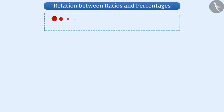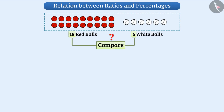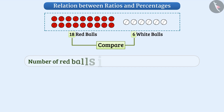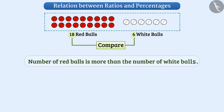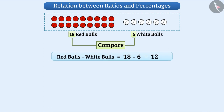This box contains 18 red balls and 6 white balls. If you are asked to compare their numbers, we can say the number of red balls is more than the number of white balls, but such statements do not give us a precise sense of numbers. For example, the number of red balls is 18 minus 6, equal to 12 more than the number of white balls.